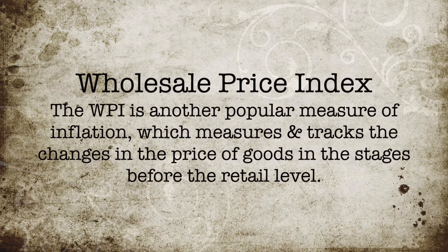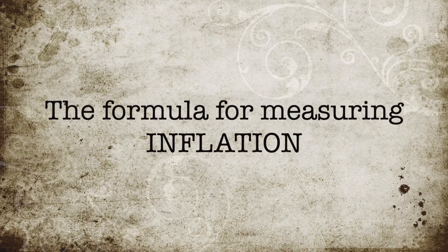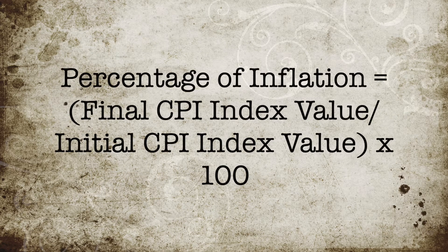The Wholesale Price Index (WPI) is another popular measure of inflation which measures and tracks changes in the price of goods in the stages before the retail level. While WPI items vary from one country to another, they mostly include items at the producer or wholesale level. The formula for measuring inflation uses these price indexes to calculate the inflation between two particular months or years. The percentage inflation rate equals the final CPI index value divided by the initial CPI index value, multiplied by 100.